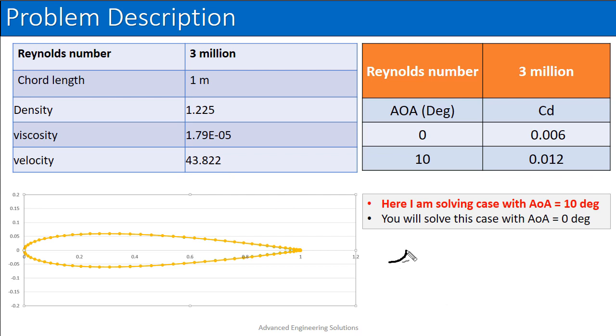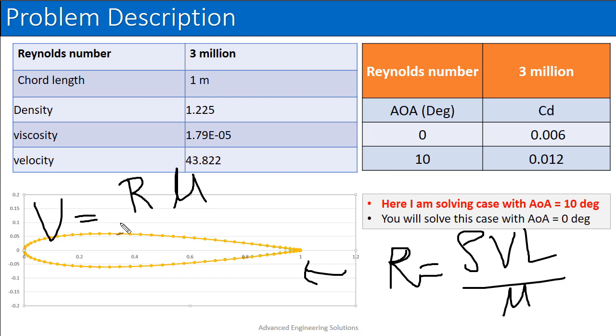As you know that the formula for Reynolds number is equal to rho VL upon mu. We can find out the velocity by the Reynolds number times the viscosity divided by the density times length.